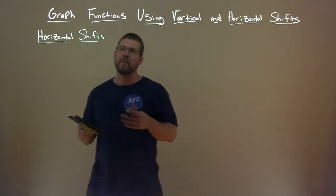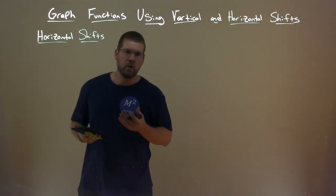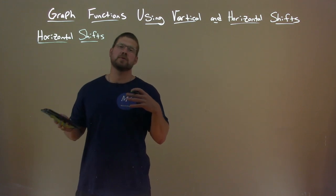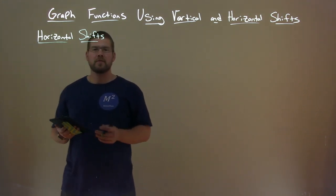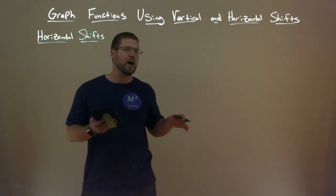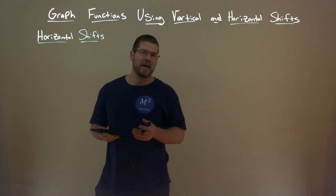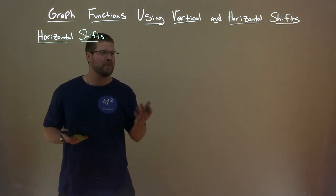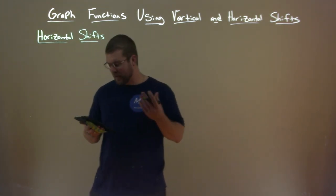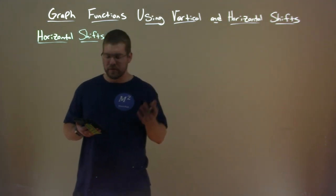Now we're going to talk about horizontal shifts. One trick I always remembered: horizontal — think about the horizon, it goes left to right. Vertical — think about a movie called Vertical Limit, it's about climbers. The horizontal part is easy: the horizon. So what is a horizontal shift? Let's look at our graph here. We're given our function f of x, and notice that function is shifted to the left. They have f of x plus 1, and the 1 is inside the parentheses, and it's shifted to the left.